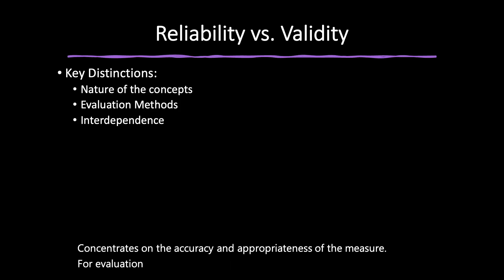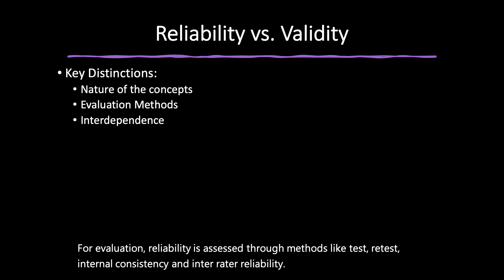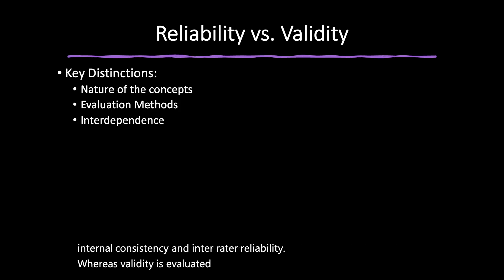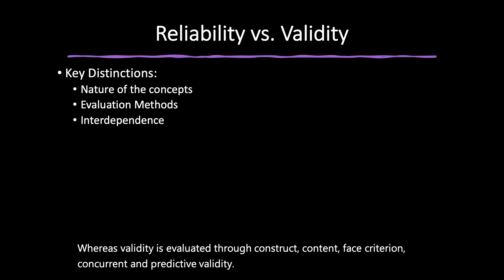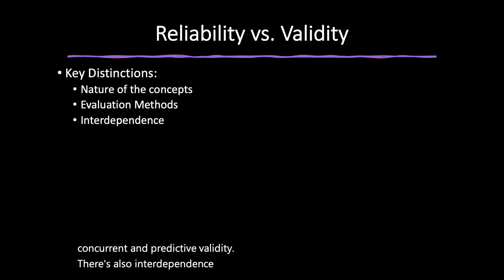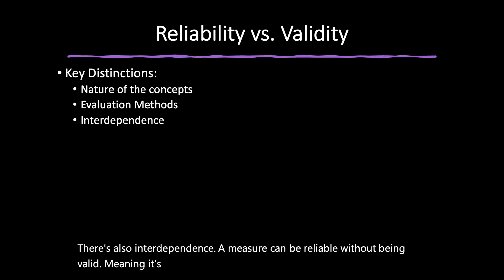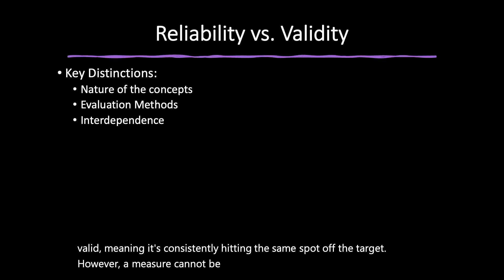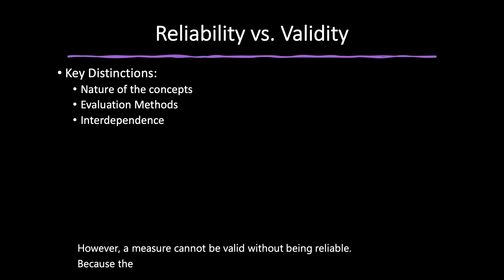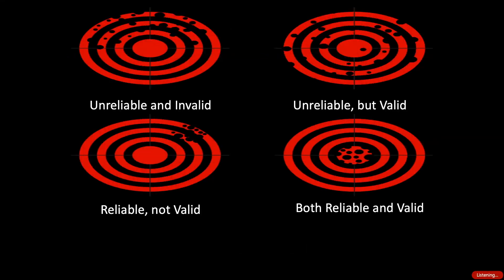For evaluation, reliability is assessed through methods like test-retest, internal consistency, and inter-rater reliability, whereas validity is evaluated through construct, content, face, criterion, concurrent, and predictive validity. There's also an important interdependence: a measure can be reliable without being valid — consistently hitting the same spot off the target. However, a measure cannot be valid without being reliable, because validity requires consistent measurement to accurately reflect the construct.